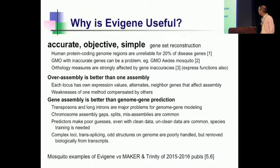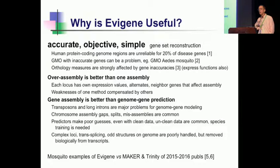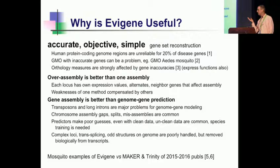Now that we're engineering our agricultural and pest species to try and solve some of our problems — GMO organisms, including mosquitoes, the Aedes that carries the Zika virus — we're modifying these organisms' genes without accurately knowing what genes they already contain. That might be something that we should look at.